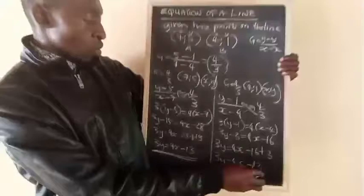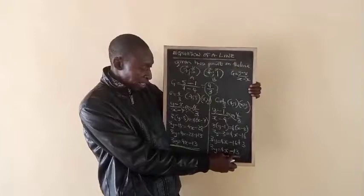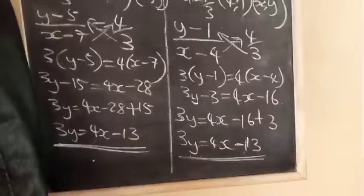we get 3y equals 4x minus 16 plus 3. Minus 3 moves to the other side, so it becomes plus 3. So we get 3y equals 4x minus 13, because minus 16 plus 3 is minus 13. I think you can see that the answers are not the same.